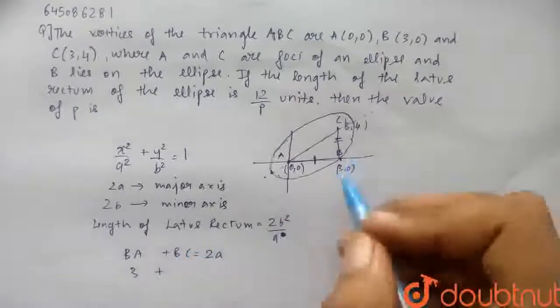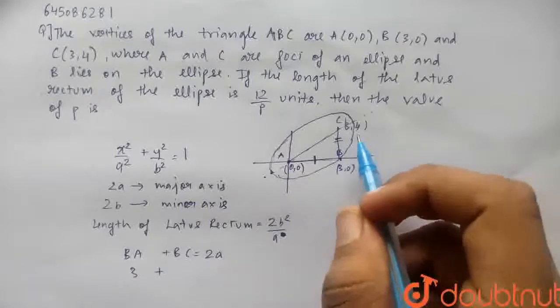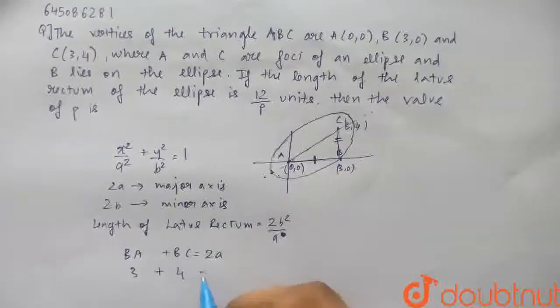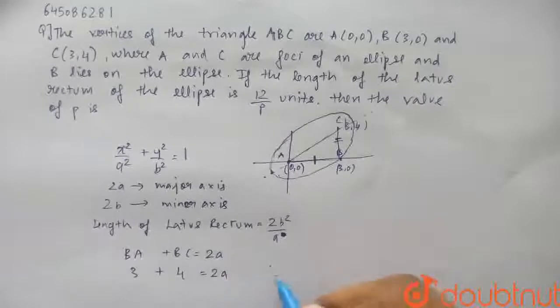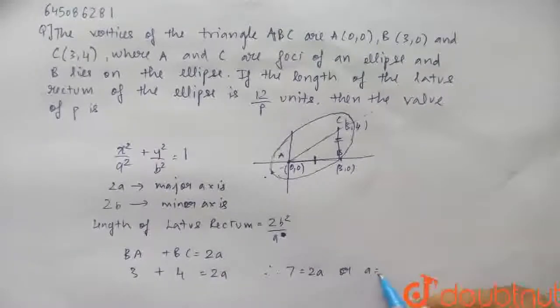So 3 plus the value of BC, from 3,0 to 3,4. You can use distance formula but it is also very logical. It is 4. It equals 2a. Therefore, 7 equals 2a or a equals 7/2. Therefore, we got the value of a.